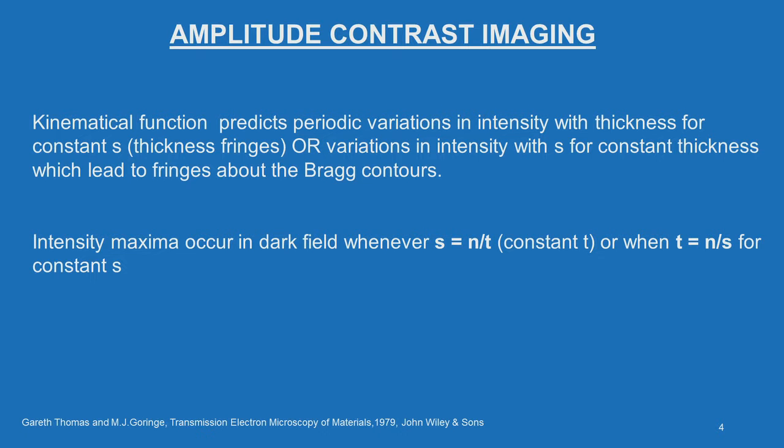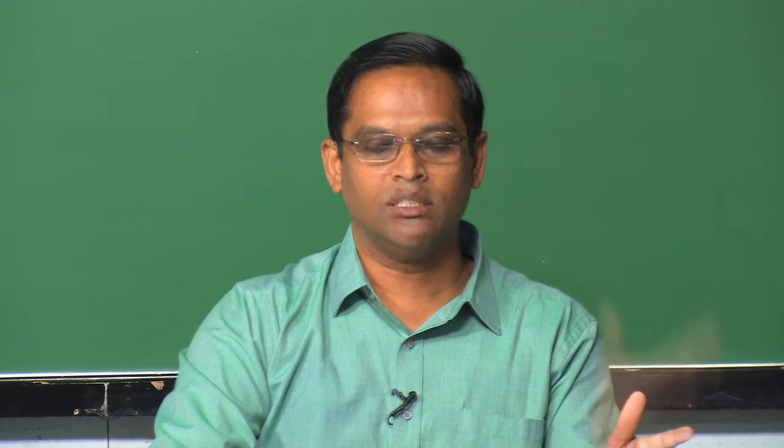The kinematical function predicts a periodic variation in intensity with thickness for a constant S. If S is constant, the intensity varies periodically; alternatively, the variation in intensity with S for a constant thickness will also describe a kind of fringes. So the kinematical theory tries to explain the fringes which we see in bright field TEM imaging.